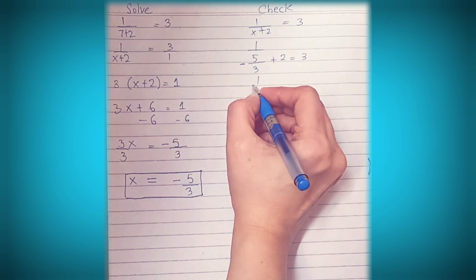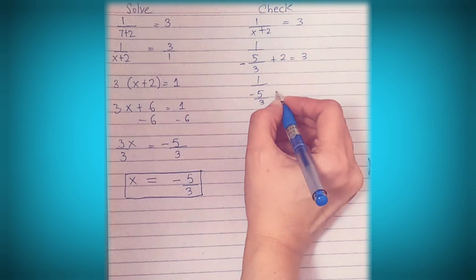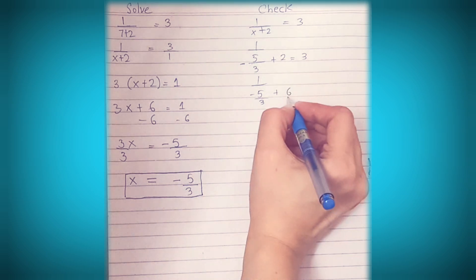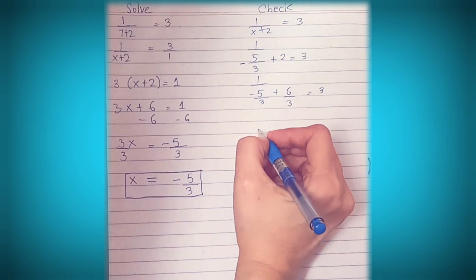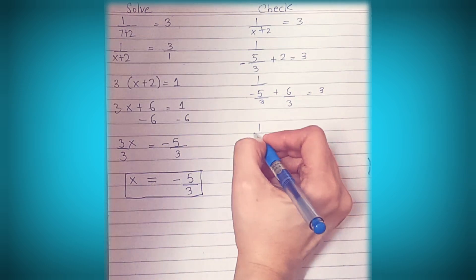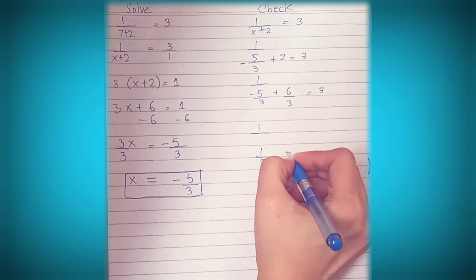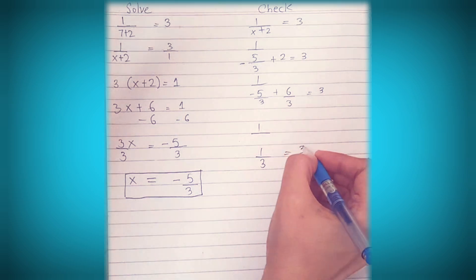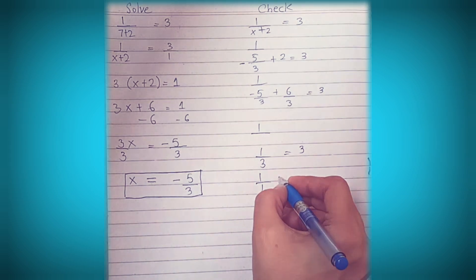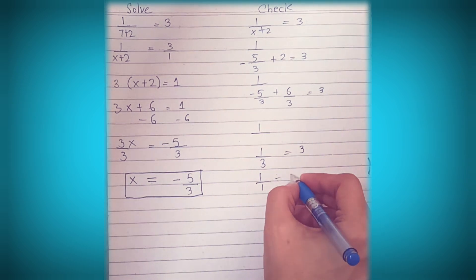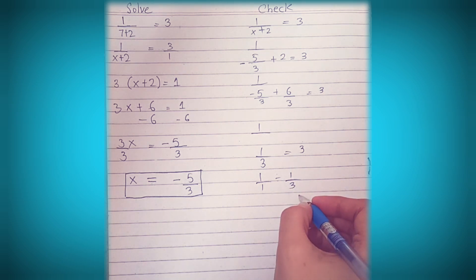So we have 1 over negative 5 over 3 plus 2. They don't have the same denominator, so we have to change 2 over 1 into 6 over 3, since 6 over 3 is equal to 2. Now we can combine negative 5 thirds plus 6 over 3. Because negative 5 plus 6 is 1, this equals 1 over 3.